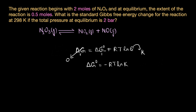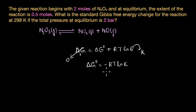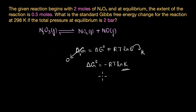Where G° is basically the standard Gibbs free energy change for the reaction when all the reactants and the products are in their standard states. This is a very important thermodynamic relation that relates the standard Gibbs free energy change with the equilibrium constant of a reaction. We have already talked about this relationship in detail in another video.